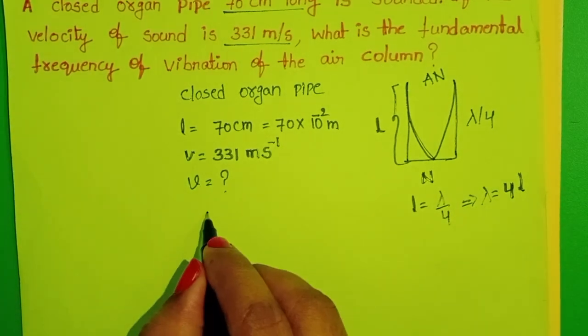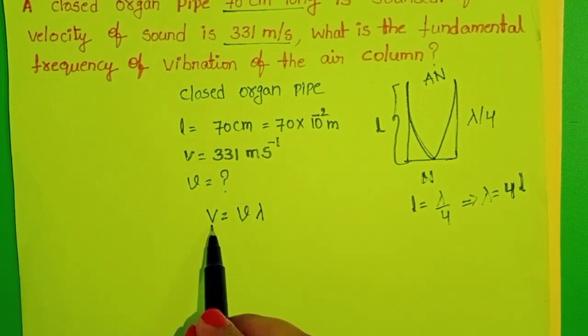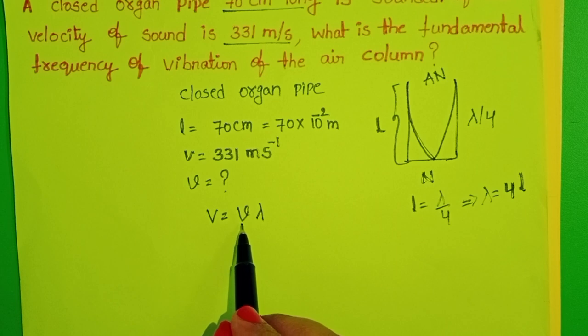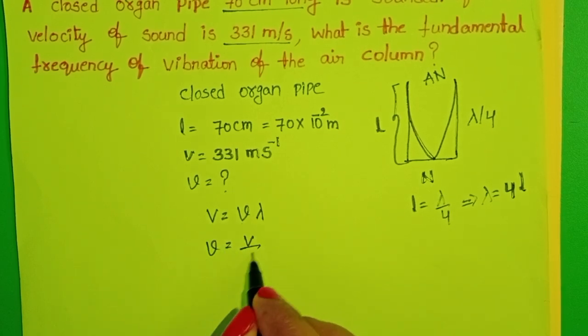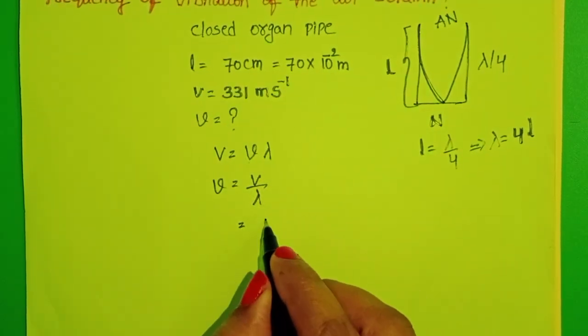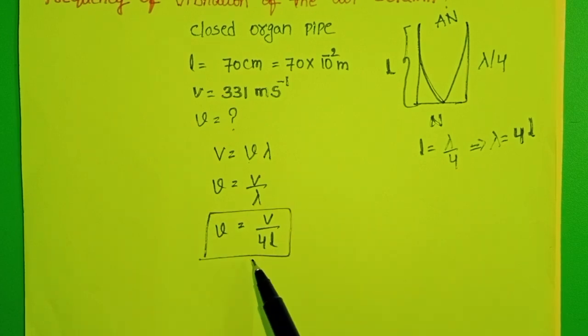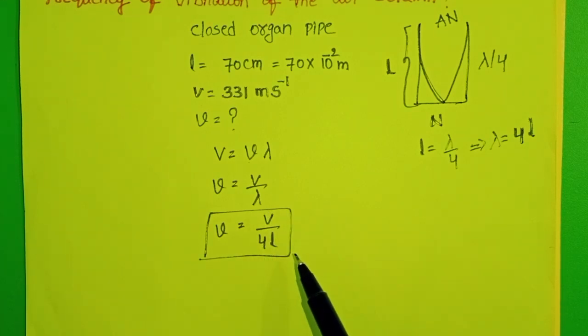We know velocity of sound V equals nu lambda, where V is velocity of sound and nu is frequency. From this, frequency equals V by lambda. In place of lambda, substitute 4L. This is the formula to find out the fundamental frequency in closed organ pipe.